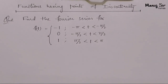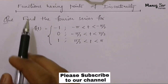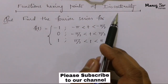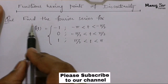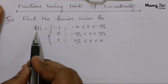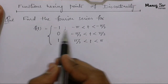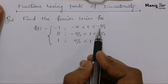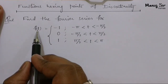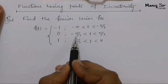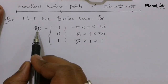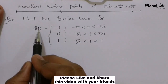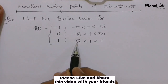Hey guys, this is Manoj sir, and in this video we are going to learn Fourier series where the functions are having points of discontinuity — a very important problem. The problem says: find the Fourier series for f(t) = -1 when t is from -π to -π/2, f(t) = 0 when t is from -π/2 to π/2, and f(t) = 1 when t is from π/2 to π.